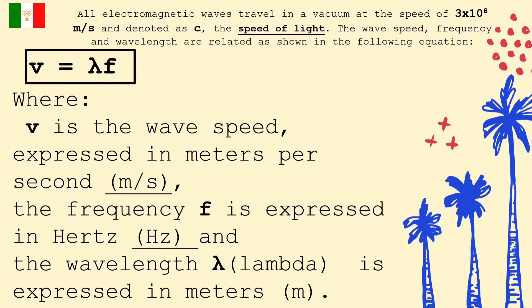The wave speed, frequency, and wavelength are related as shown in the following equation. We have the speed of the wave, or abbreviated as V, or C, it is expressed in meters per second. And we have the frequency, it is expressed in hertz, or Hz, and the wavelength, or lambda, is expressed in meters.